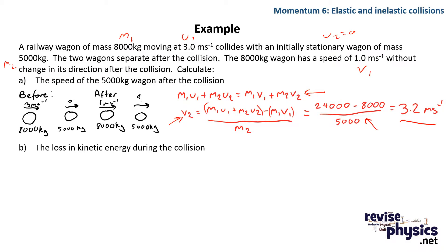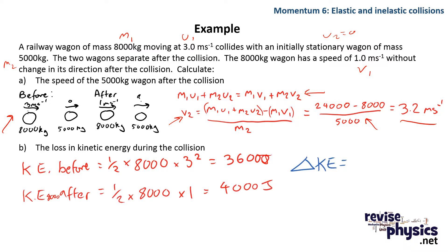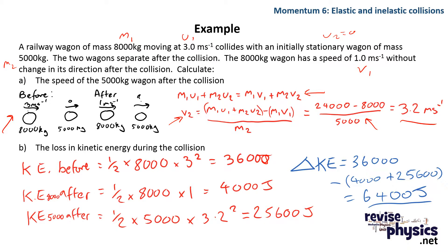Next, we find the loss in kinetic energy. KE before is just the kinetic energy of the 8,000 kg wagon, which gives 3,600 joules. KE after: the 8,000 kg wagon contributes 4,000 joules, and using the velocity we just found, we calculate the KE of the smaller wagon. Adding them together and subtracting from the initial KE gives a change in kinetic energy of 6,400 joules. The approach is always: find KE before, find KE after, compare them.